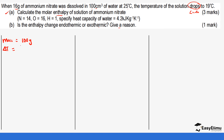The initial temperature was 25°C and the final was 19°C. So the change is 19 minus 25, which gives a negative value, but we do not use that negative value in our calculation. The magnitude of the change is 6°C. The negative sign simply tells you there is a drop, helping you identify whether the reaction is exothermic or endothermic — do not use the negative in the calculation.